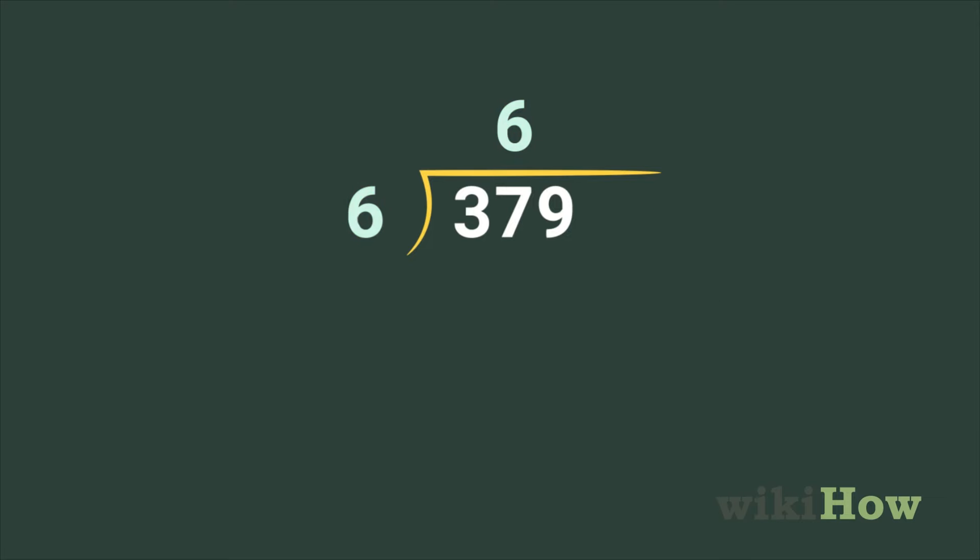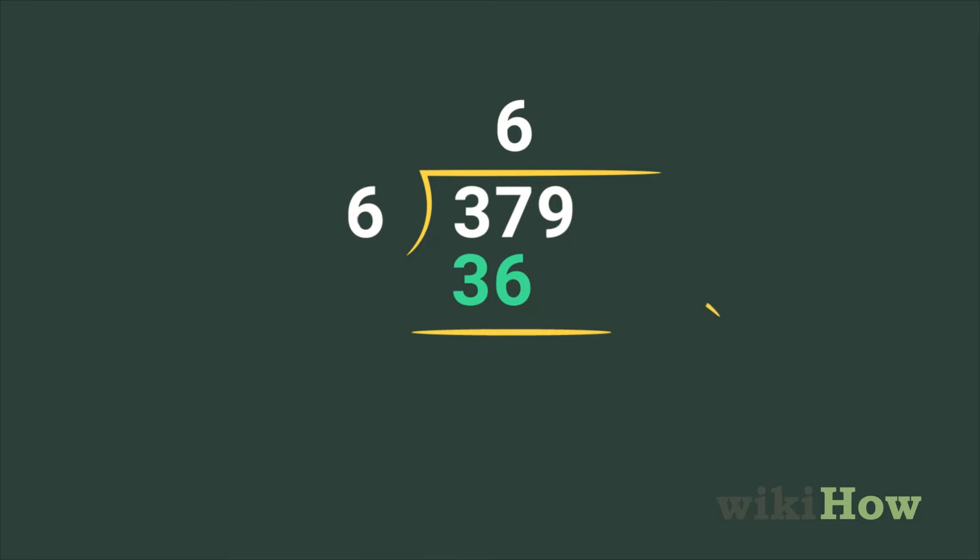Step 4. Write the answer below the number inside the division bar, so the first digits of both numbers are lined up.